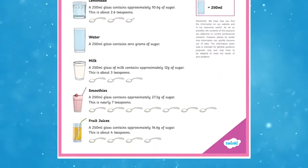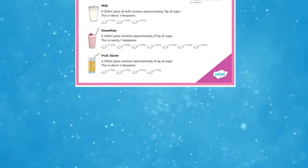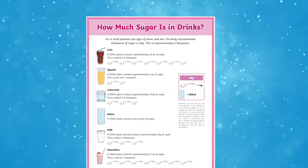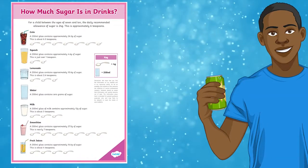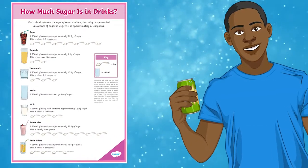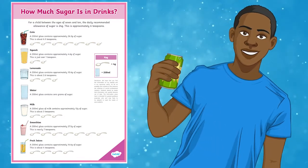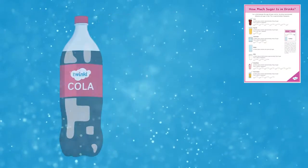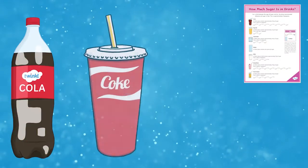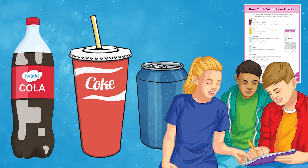This brilliant display poster is a visual reminder and a great conversation starter about how much sugar is in the drinks that your Key Stage 2 class may consume. It is beautifully illustrated and clearly designed, and would look great on a science topic board about dental health. You may wish to use the poster whilst conducting experiments about sugar in drinks, or as a discussion topic during a PSHE health topic.